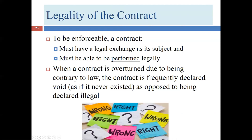There are actually two elements to this idea of the contract being legal. First, it has to have a legal exchange as its subject — in my example, the illegal object was heroin. But sometimes something can have a legal object as its subject yet still needs to be performed legally. Imagine you want to buy the car I'm using right now — perfectly lawful transaction — but it turns out I actually stole the car and don't own it.